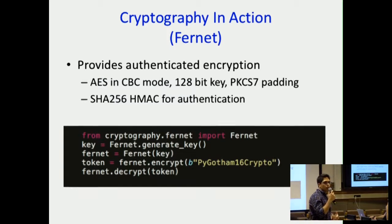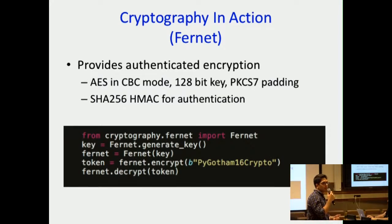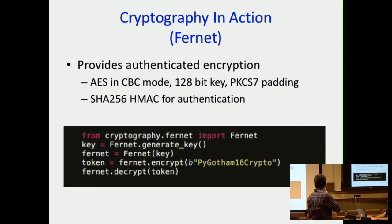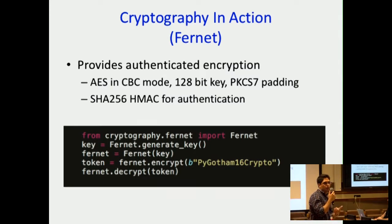If you just want to encrypt files on your computer, the cryptography library has a recipe called Fernet. It does AES in CBC mode with a 128-bit key and also produces a MAC to make sure your files haven't been modified. You don't need to implement anything — just one line of code. You can either randomly generate the key or derive it from a password by hashing that password to expand it to the required key size. You pass your key, encrypt whatever you want, and get a token which is the encryption plus authentication code. You can then decrypt using that same token.